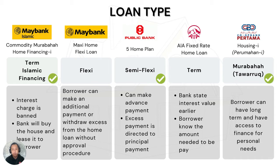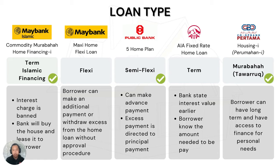For Public Bank, they use semi-flexi, which has a slight difference from flexi. The only difference is that semi-flexi states that any excess payment is directed straight to principal payment. For the AIA fixed rate home loan, they use a basic term loan — the bank states the interest value to the borrower upfront so the borrower is aware of the amount they need to pay. The last one is Bank Pertama with Murabaha Tawarruq, where the borrower can have a long-term loan and access the finance for personal use.